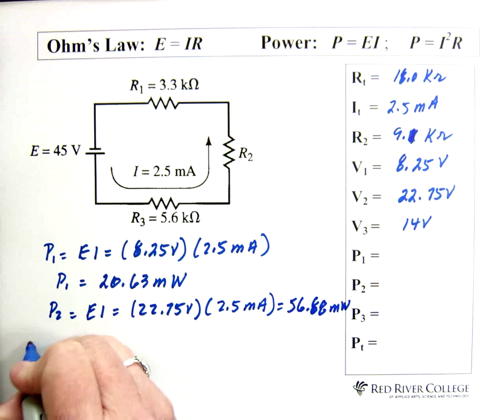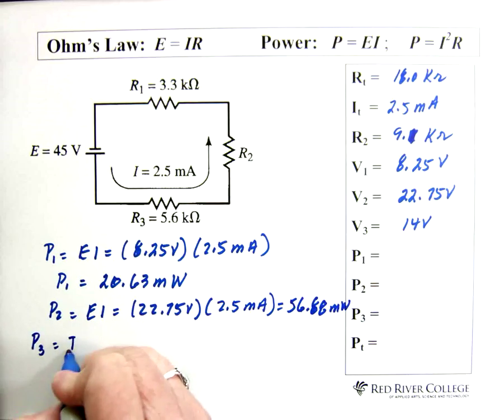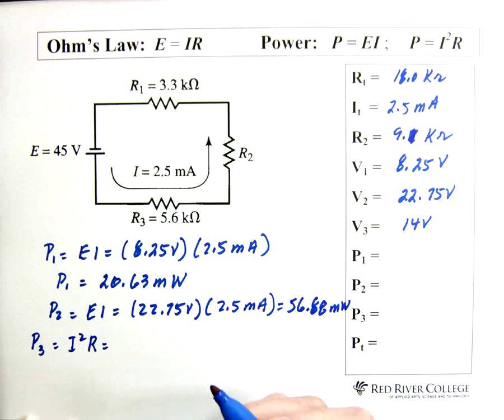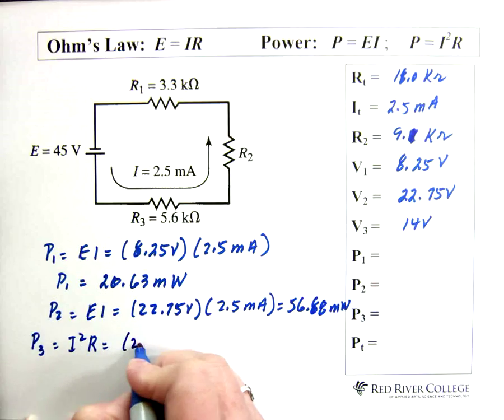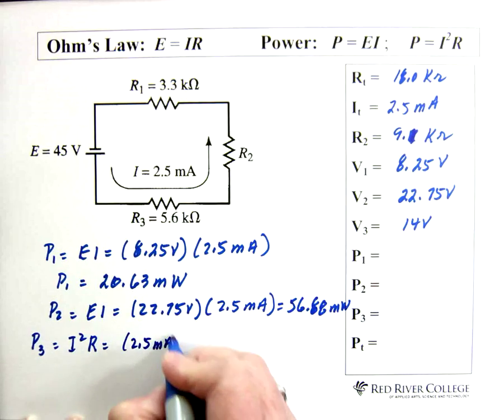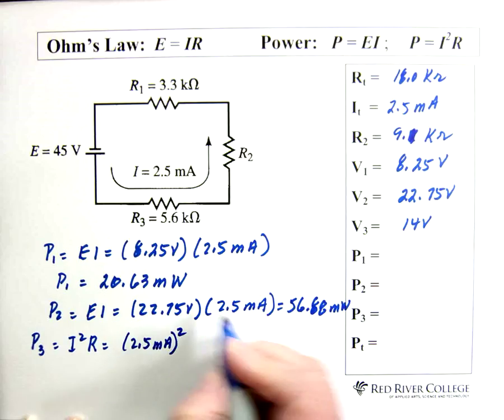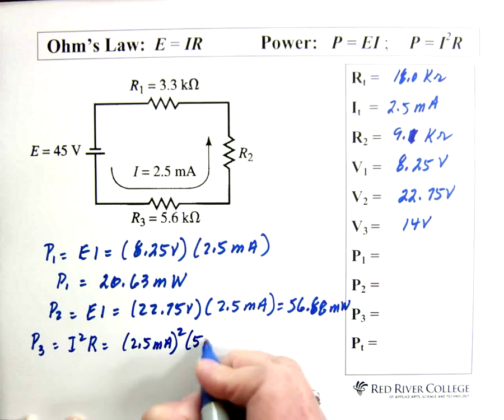Power 3. This time I'm going to use I squared R. Just to remind us that we can do that. Current is 2.5 milliamps. And that's squared, multiplied by the resistance, which is 5.6 kilo-ohms.